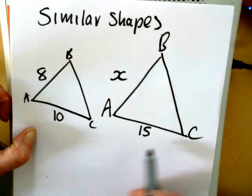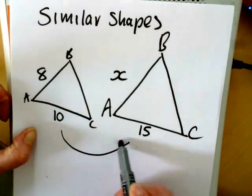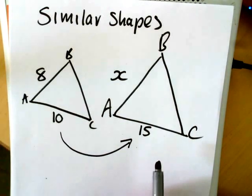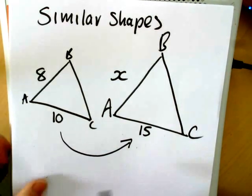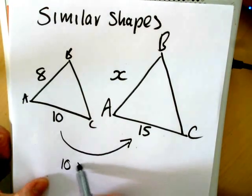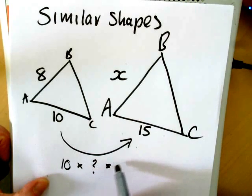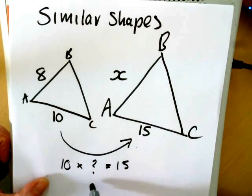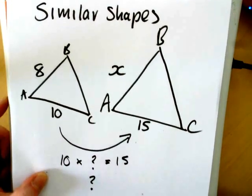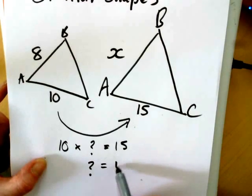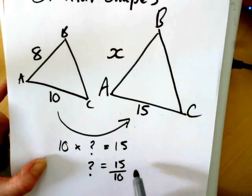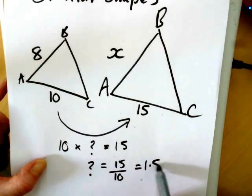Now if we look at our AC to AC, then 10 has been scaled up to 15. Now this is by multiplication, so this is 10 times something equals 15. Something will equal 15 divided by 10, which is 1.5.